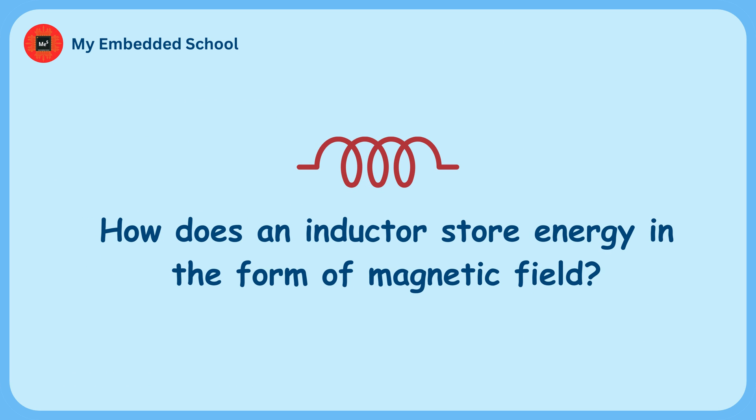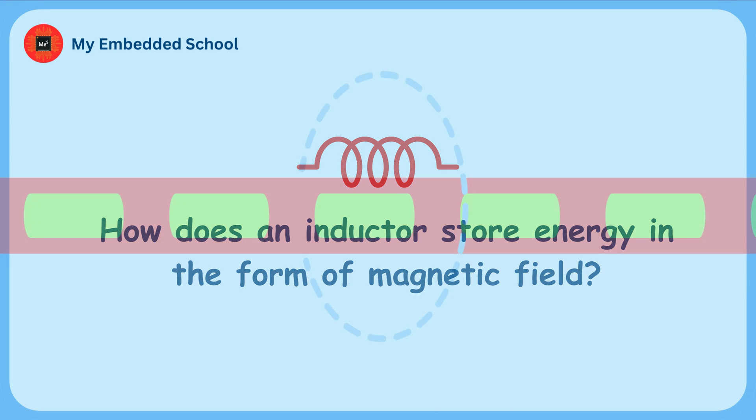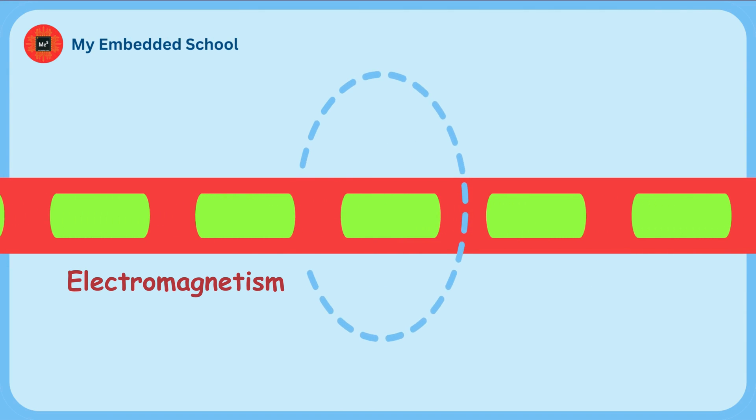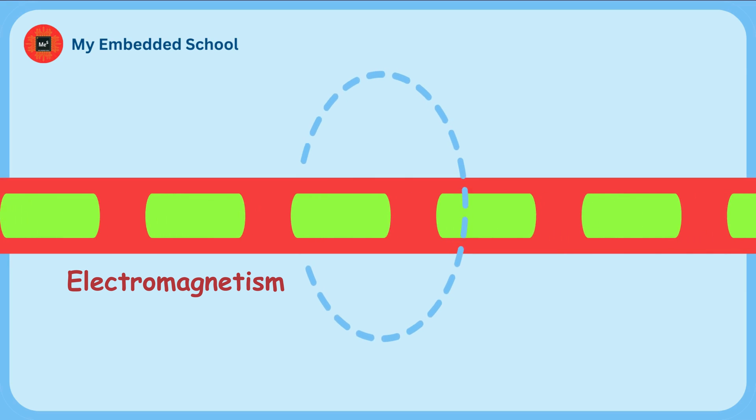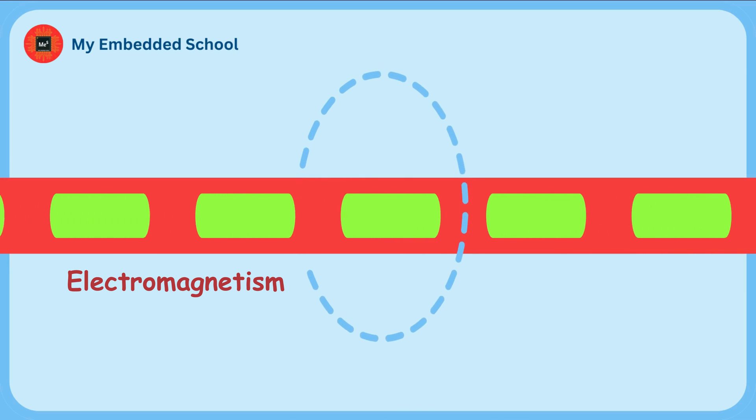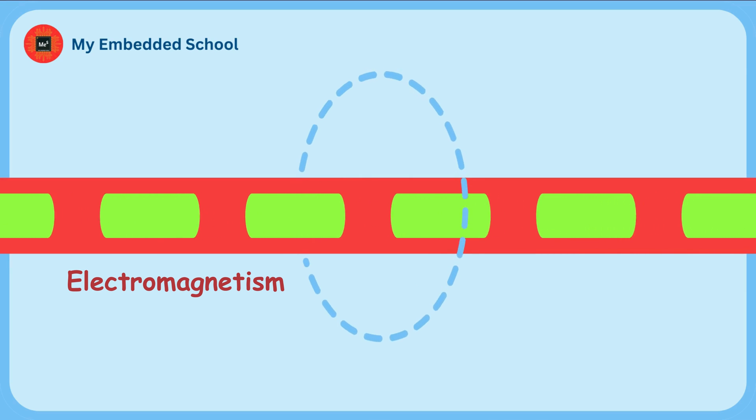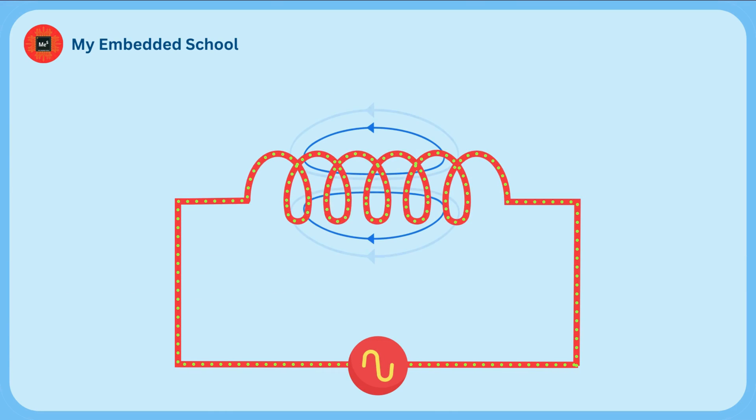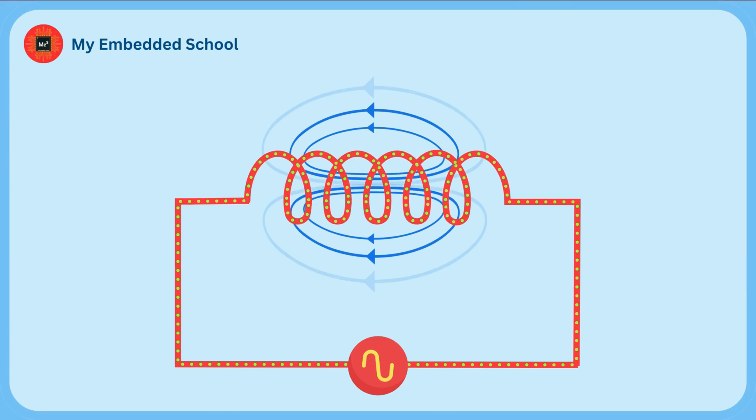How does an inductor store energy in the form of a magnetic field? One of the basic properties of electromagnetism is that when current flows through a conductor, it will create a small magnetic field around the conductor. A strong magnetic field is produced when a conductor is twisted like a coil.